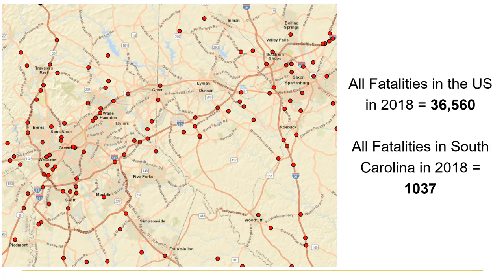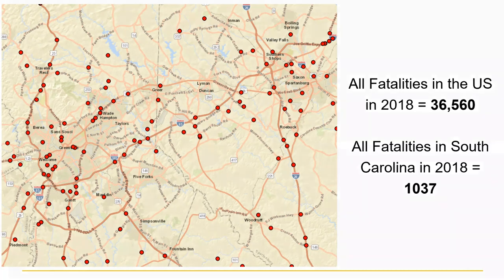I wanted to zoom in a little bit so you could get an idea of how it impacts different areas. This is still 2018 numbers, and again, each one of these red circles is a fatal crash — at least one person lost their life there. I zoomed in on the Greenville-Spartanburg area so you can see just how much of a problem it is. That's the why. We have the opportunity to bring those numbers down, and as the owners and managers of roadway systems — whether you're with the city, the county, or the state — we have the duty to do whatever we can to make these roads safer.